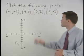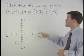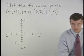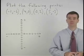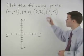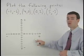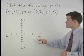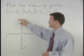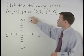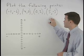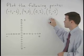Here we're asked to plot the following points on the coordinate system: negative 1, negative 6; 4, 0; 0, 2; and 5, negative 3.